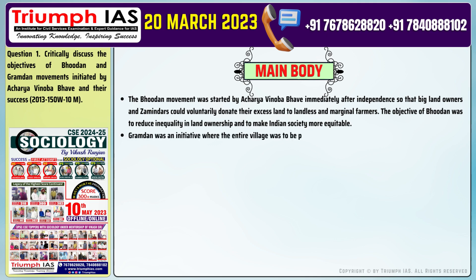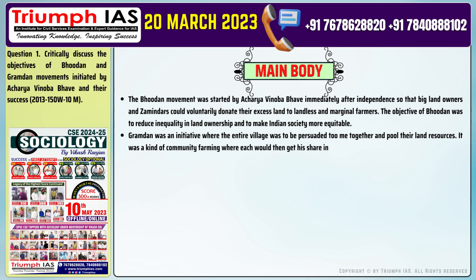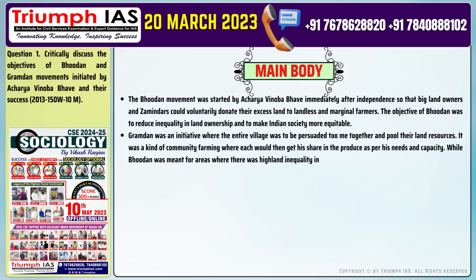Point 2: Gramdhan was an initiative where the entire village was to be persuaded to pool their land resources together. It was a kind of community farming where each person would get their share in the produce as per their needs and capacity. While Bhudan was meant for areas with high land inequality, Gramdhan was meant for areas with low inequality.